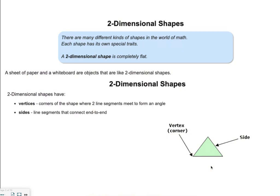The first type of shape we're going to look at are two-dimensional shapes. These are shapes that are completely flat. If you were to draw them on a whiteboard or a sheet of paper, you would see them as is. There's no depth to them.